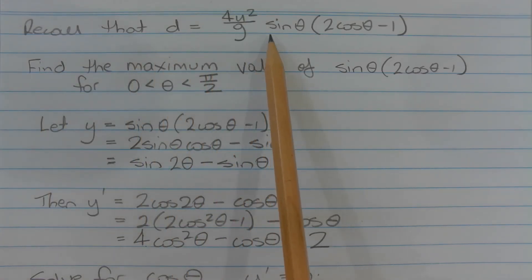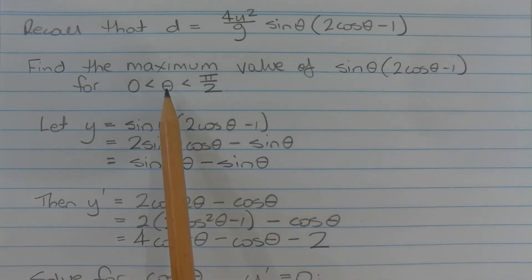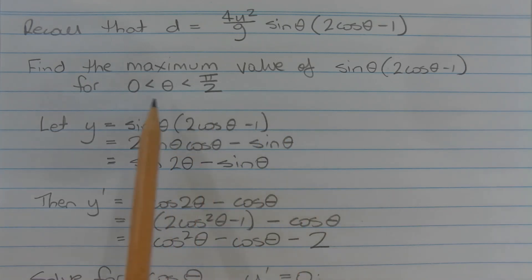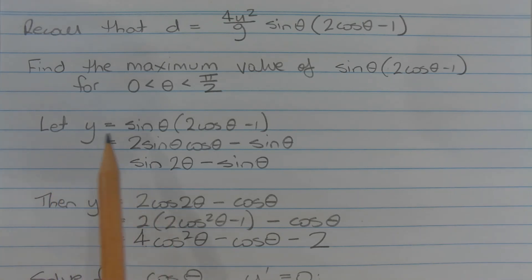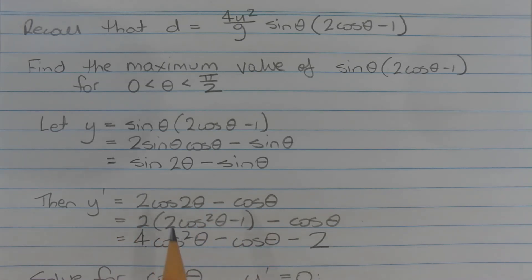Recall that d equals (4u squared / g) times sin(theta) times (2 cos(theta) minus 1). I'm going to find the maximum value of sin(theta) times (2 cos(theta) minus 1) for values of theta between 0 and pi/2. Let y equals sin(theta) times (2 cos(theta) minus 1). To make differentiation easier, expand the brackets: y equals 2 sin(theta) cos(theta) minus sin(theta). Expressing 2 sin(theta) cos(theta) as a double angle gives y equals sin(2 theta) minus sin(theta). Differentiating with respect to theta: y' equals 2 cos(2 theta) minus cos(theta). Expressing cos(2 theta) in terms of cos(theta): y' equals 2(2 cos squared theta minus 1) minus cos(theta), which equals 4 cos squared theta minus cos(theta) minus 2.